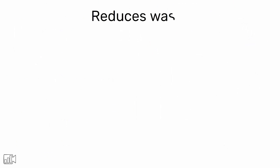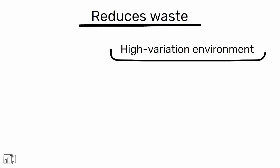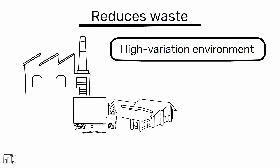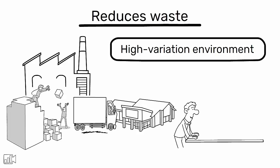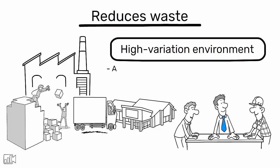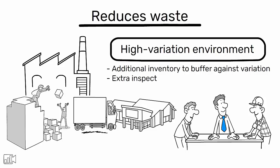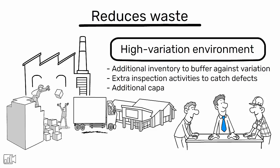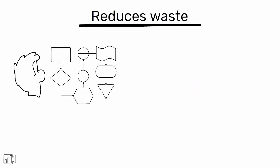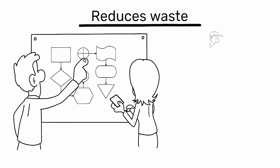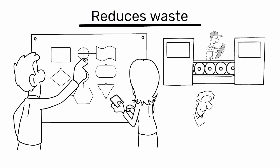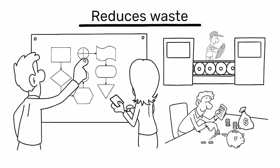Thirdly, it reduces waste. In a high variation environment, there's often a need for extra resources to compensate for the unpredictability. This could mean additional inventory to buffer against variation, extra inspection activities to catch defects, or additional capacity to handle rework. By reducing variation, you can eliminate these wastes and make your operations leaner and more cost-effective.